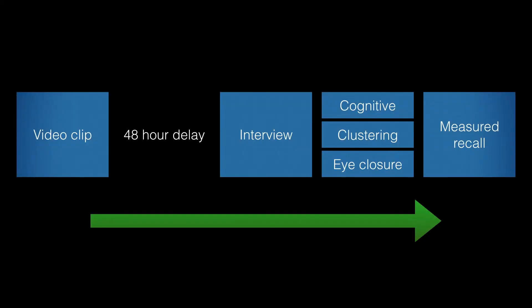In the next phase, participants engaged in a second attempt at recall. Those in the standard enhanced cognitive interview condition were asked to recall the video in the reverse order. In both conditions using the revised enhanced cognitive interview, participants were instead asked to recall with the aid of category clustering recall — a strategy consisting of asking participants to recall everything one more time but organizing their recall and speech into information categories.